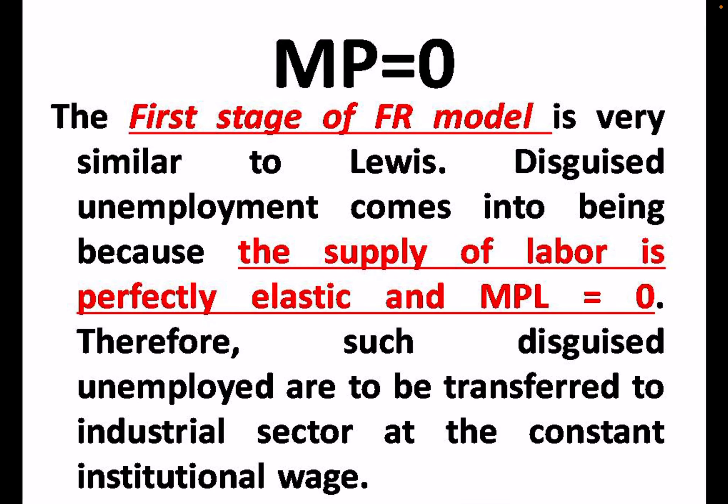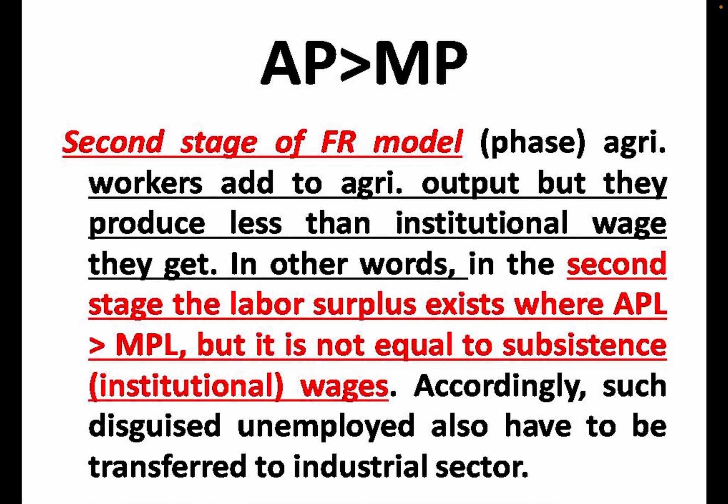There is a growth tool which is the generation of agriculture surplus. The first stage of the Fei-Ranis model is very similar to the Lewis model. Disguised unemployment occurs when surplus labour exists — the surplus labour curve is perfectly elastic, meaning it is horizontal to the x-axis. The marginal productivity of labour falls to near zero because too many people are working on one agriculture land. In this situation of disguised unemployment, surplus labour from the agriculture sector should be transferred to the industrial sector at a constant institutional wage.